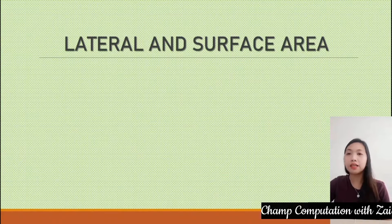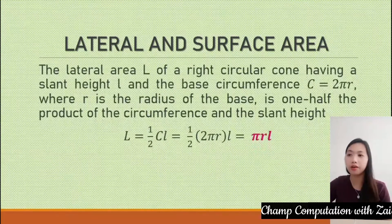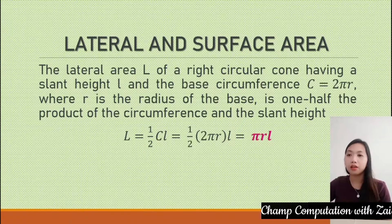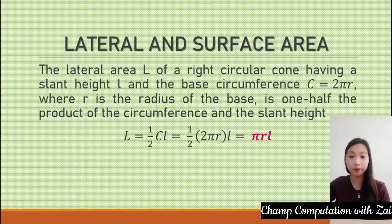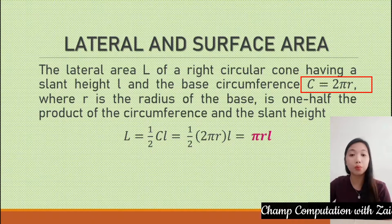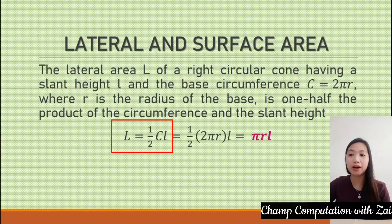So, the lateral surface area. To solve for the lateral area, the lateral area of a right circular cone is calculated using the slant height L and the base circumference. The circumference can be computed as 2πR, where R is the radius of the base. The lateral area is one-half the product of the circumference and the slant height — in symbols, one-half CL.